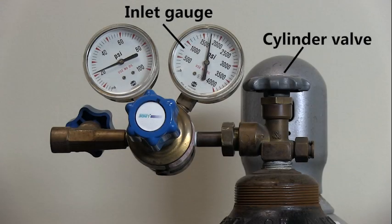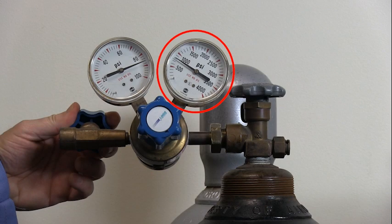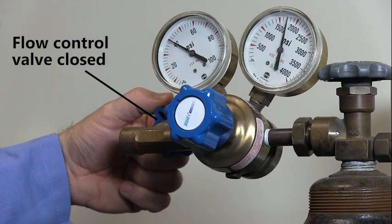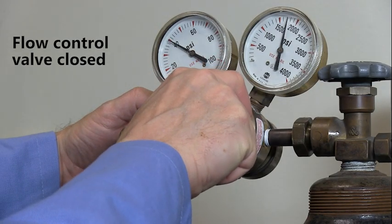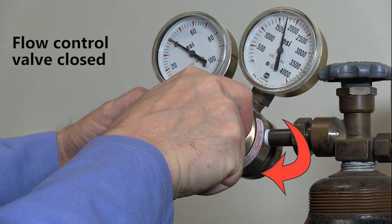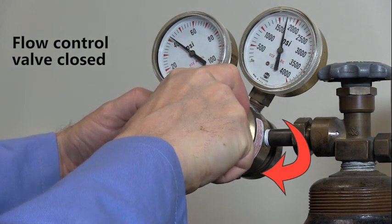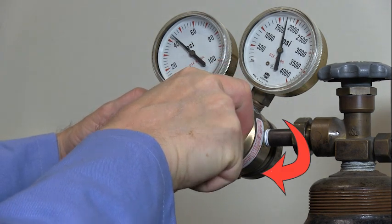Open the cylinder valve slowly until the inlet gauge on the regulator registers the cylinder pressure. If the cylinder pressure reading is lower than expected, the cylinder valve may be leaking. With the flow control valve at the regulator outlet closed, turn the pressure-adjusting screw clockwise until the required delivery pressure is reached.